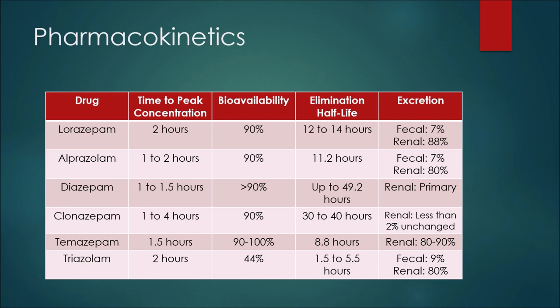For alprazolam, the time to peak concentration would be one to two hours, again with bioavailability at 90 percent. The elimination half-life is 11.2 hours, so alprazolam would stay in your system for a shorter duration of time than lorazepam. In terms of excretion, we have 7 percent fecal and 80 percent renal.